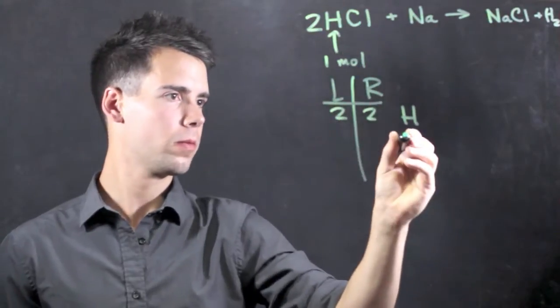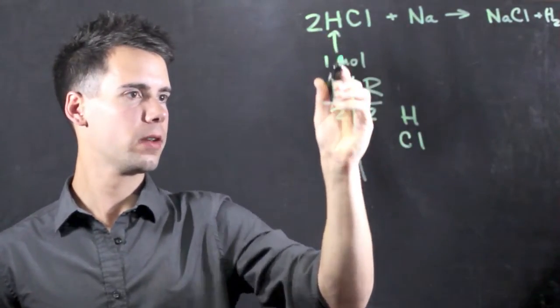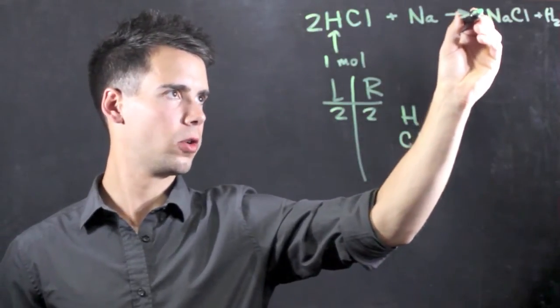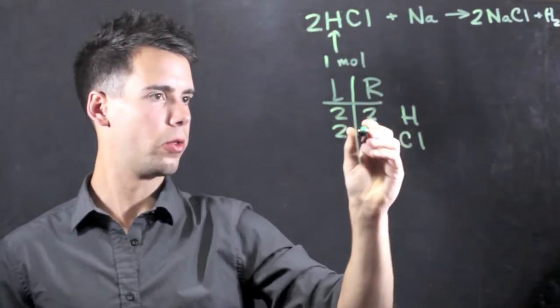Now examining chlorine, we see that it has two on the left and only one on the right. So we have to multiply this term by two, and we find that two chlorines are on the left and two are now on the right.